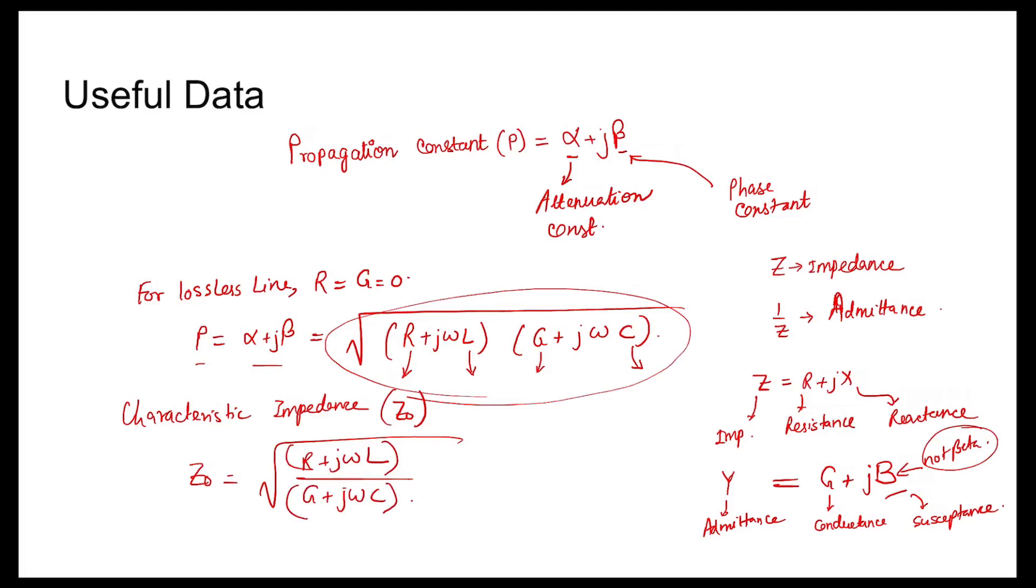Coming to the solution, propagation constant P is given as 2 + j5. Z₀ is given as 50Ω. We know P = √((R + jωL)(G + jωC)) and Z₀ = √((R + jωL)/(G + jωC)).